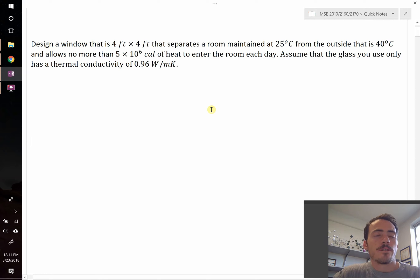Okay, this question tells us that we need to design a window that's four feet by four feet and separates a room that's maintained at 25 degrees Celsius from the outside that's at 40 degrees Celsius.